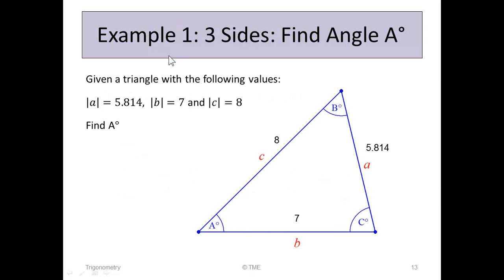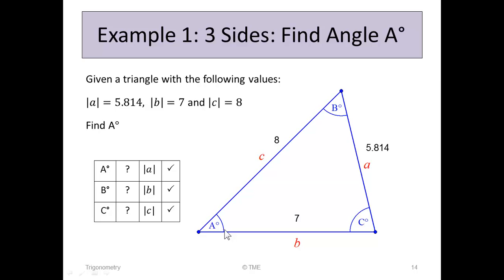In Example 1, you're given three sides of a triangle and asked to find angle A. The values given are B equals 7, A equals 5.814, and C equals 8. So you have all three side lengths but none of the angles, and the goal is to find angle A.